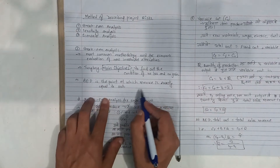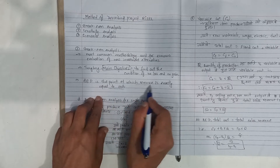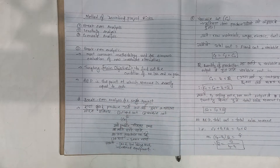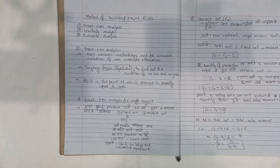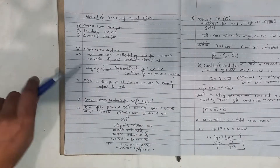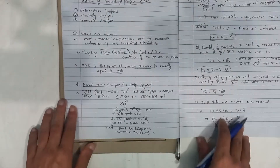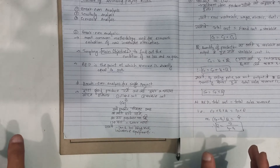The break-even point is the point at which revenue is exactly equal to cost — revenue equals cost. The main concern is that the break-even point represents the boundary between profitable and unprofitable outcomes. To produce goods, we consider fixed cost or variable cost.